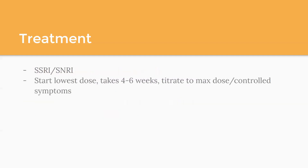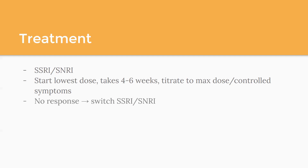For SSRIs and SNRIs, the main principles are: start at the lowest dose, it takes about four to six weeks to take full effect, then titrate to the max dose or until symptoms are controlled. With anxiety more than other conditions, patients tend to be more sensitive to medication effects. If they have no response after titrating up, the recommendation is to switch to a different SSRI or SNRI rather than adding a second agent. Pick one, titrate it up every four to six weeks, and have them come back for a visit to reassess at least every four weeks.